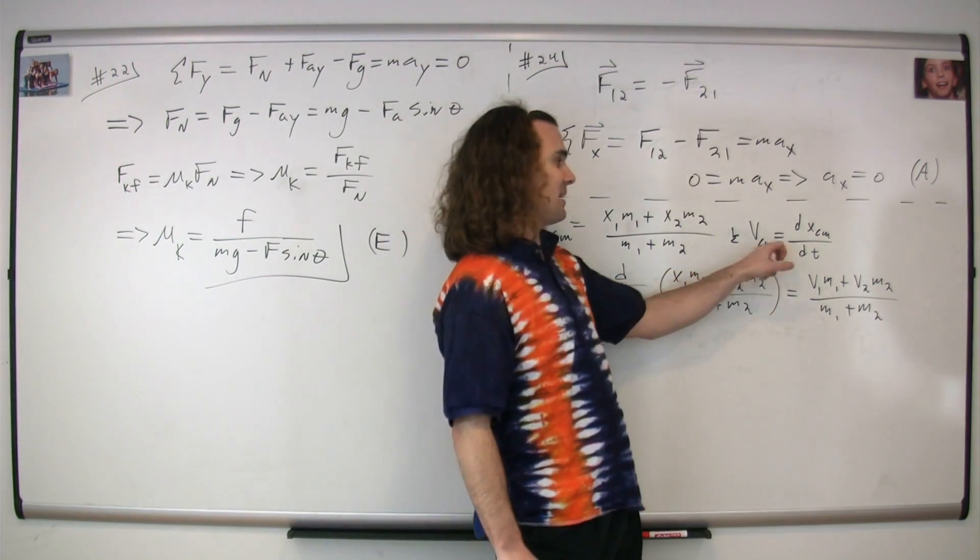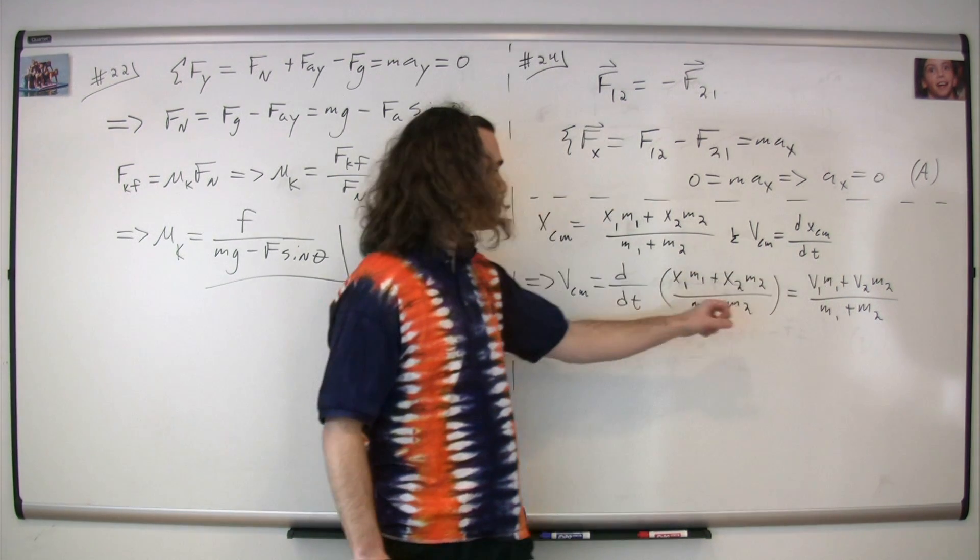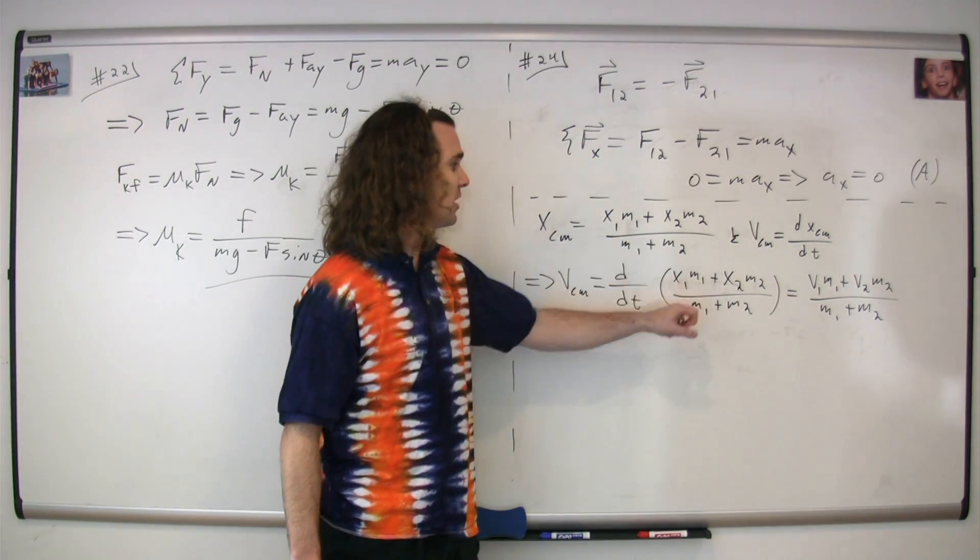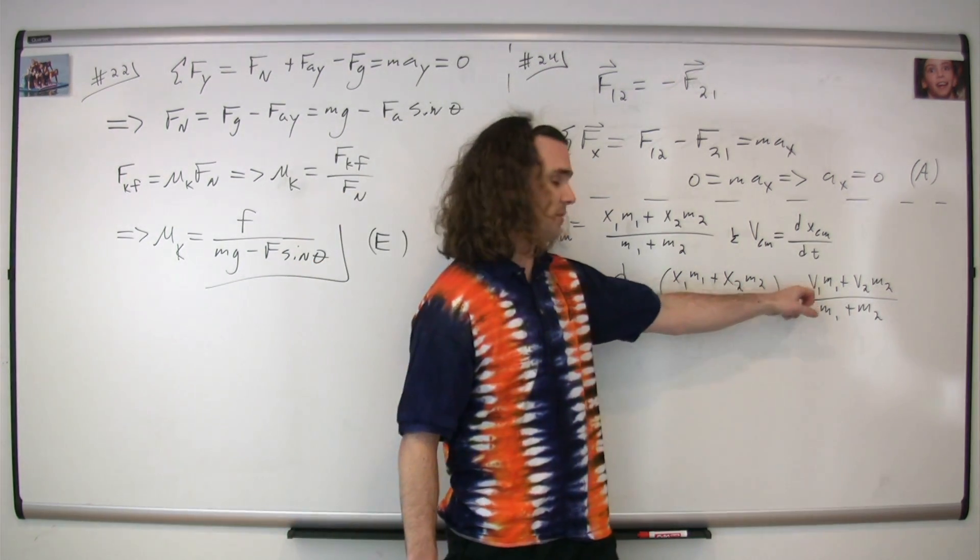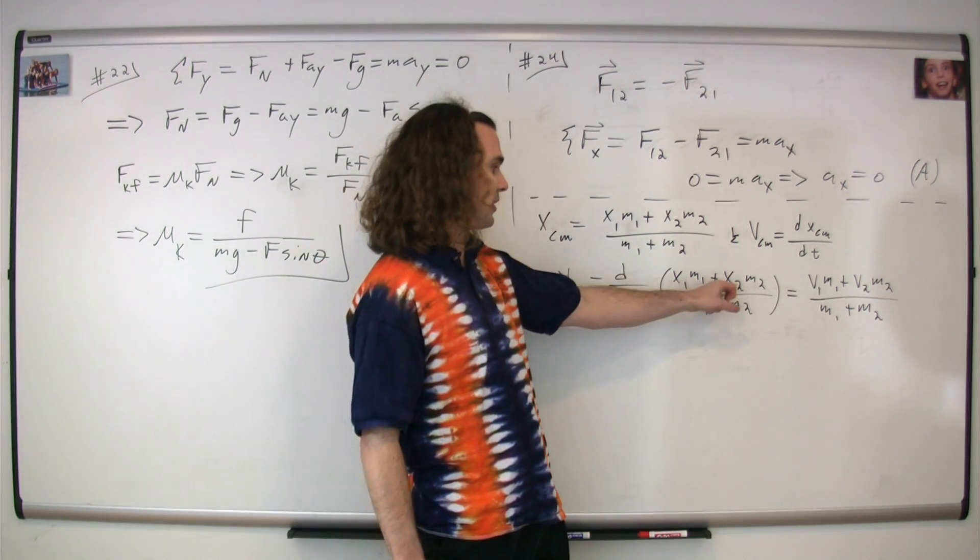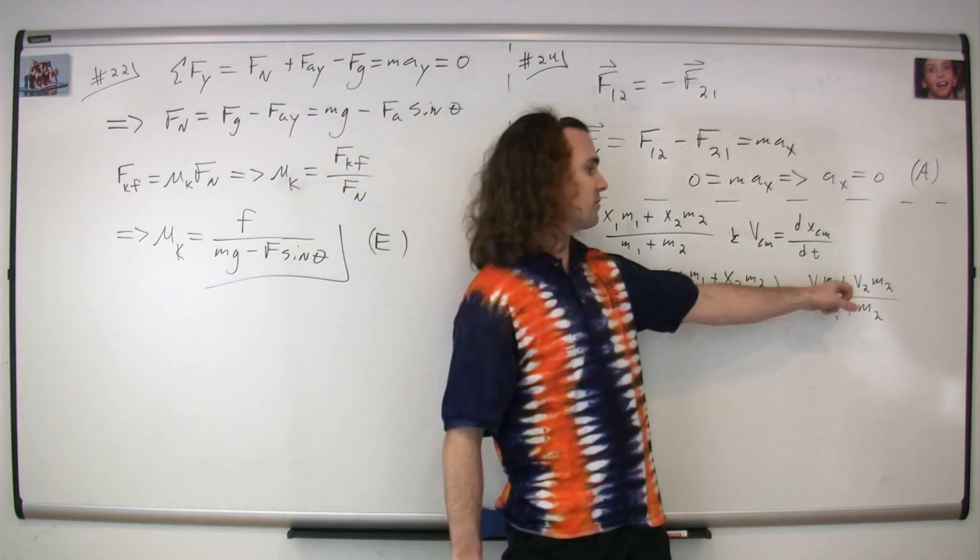So we get the velocity of the center of mass equals the derivative of the position of the center of mass with respect to time. So we simply substitute in that equation, and the derivative of the position as a function of time for one is just the velocity of one. And the derivative of object two, the position of object two with respect to time, is just velocity two.